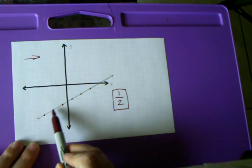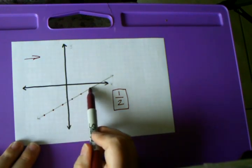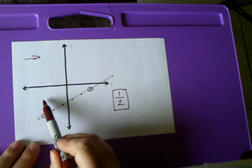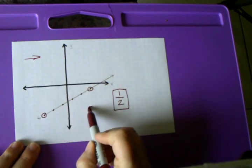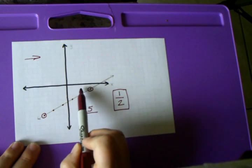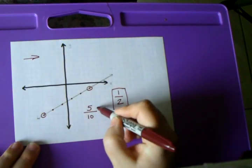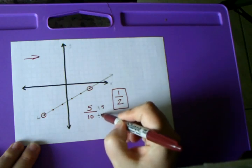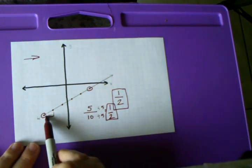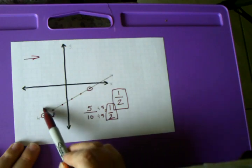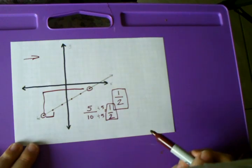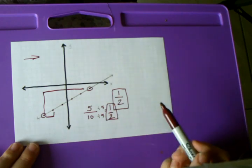Even if I used a different pair of points — continuing the line up and using two further points — I would rise five and run ten. We always reduce if we can, dividing top and bottom by five, and again get one half. So even though the first time I used these two points and the second time I used a different pair, I still end up with the same slope. The slope of a line is always the same — it doesn't matter where your points are on it. The slope remains constant.